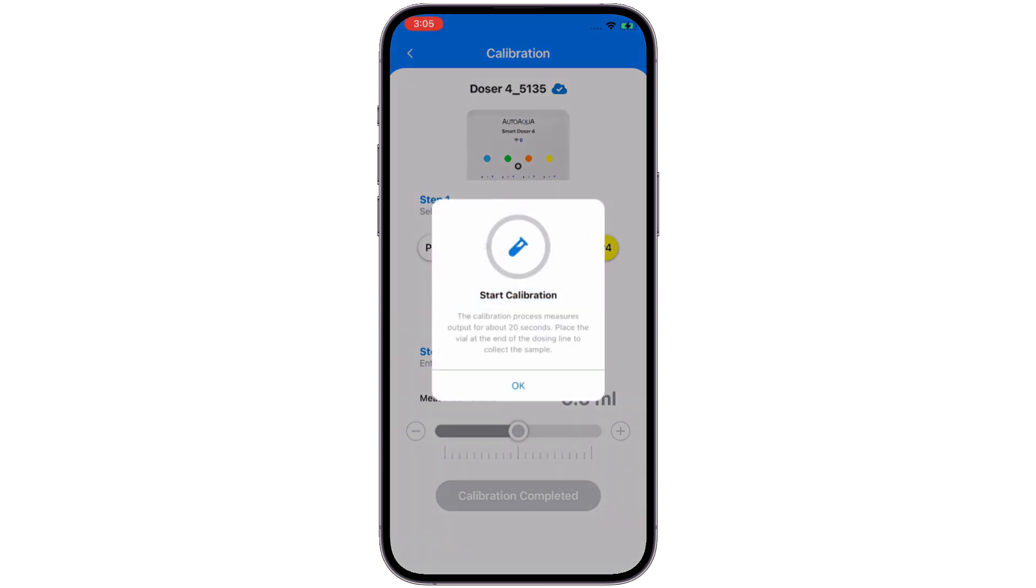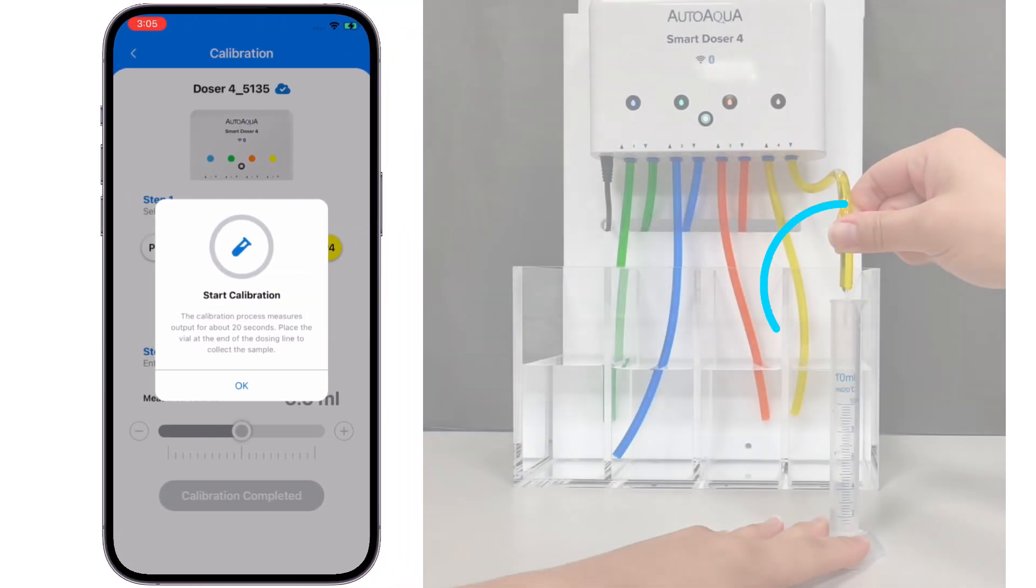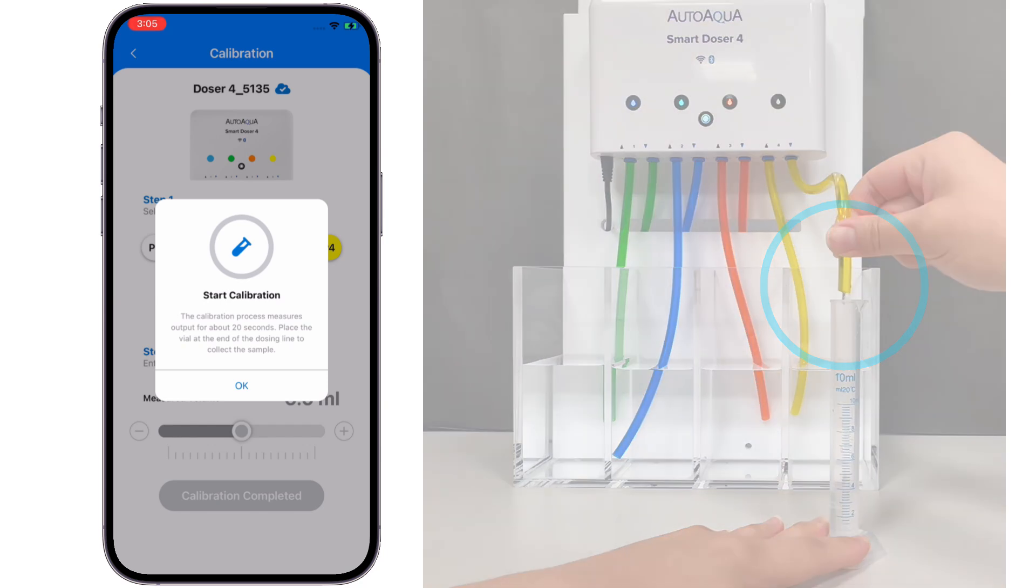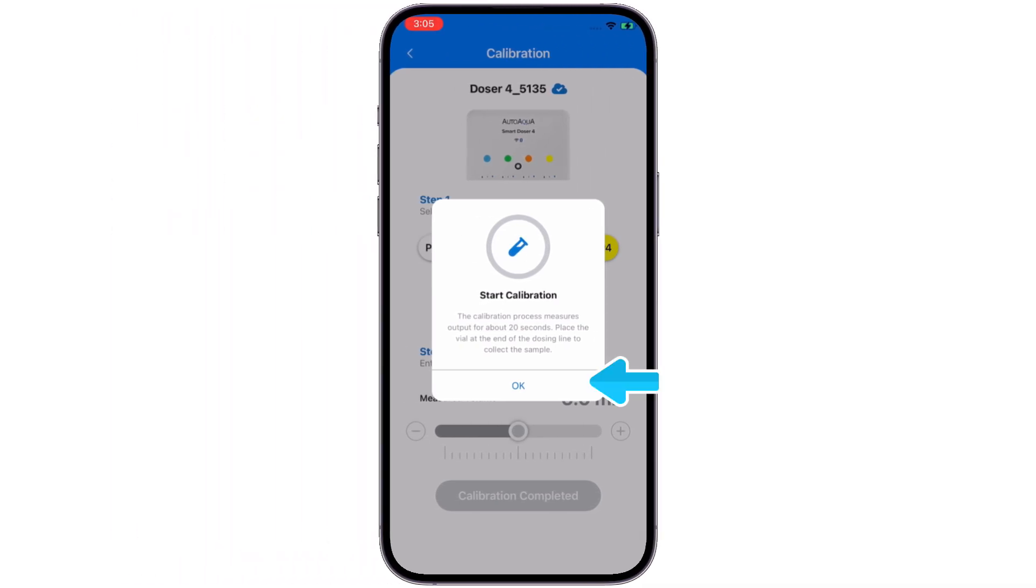The calibration process measures output for about 20 seconds. Meanwhile, please hold the tube in the center of the cylinder to avoid fluid from sticking to the cylinder wall. When ready, please press OK to start 20-second calibration dosing.